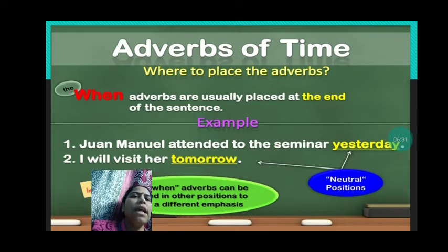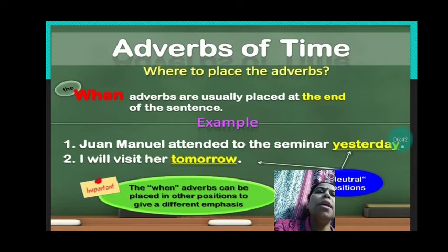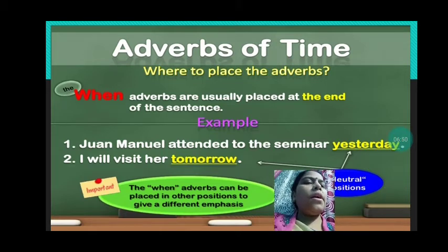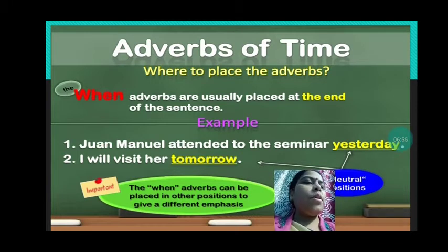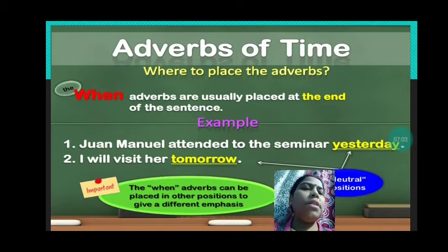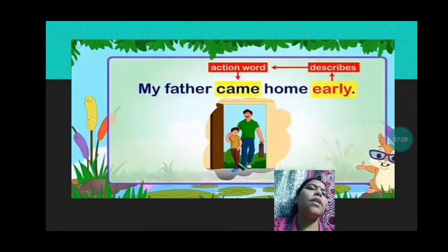Adverbs of time are usually at the end of the sentence, but they can be before the sentence also. For example, 'yesterday' is adverb of time — when we ask when did Joanne Manuel attend the seminar, you can say he attended the seminar yesterday. So it tells about the time. 'I will visit her tomorrow' — when will I visit her? Tomorrow. That also tells you about the time. When you ask the question 'when', you get the answer.